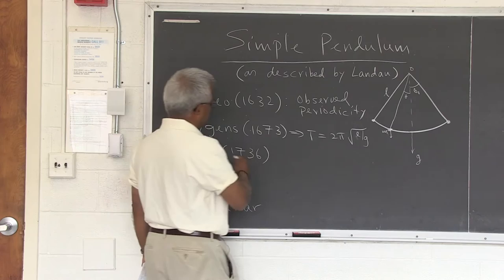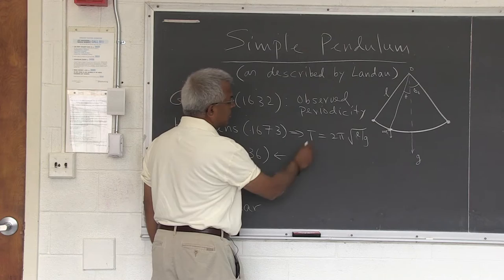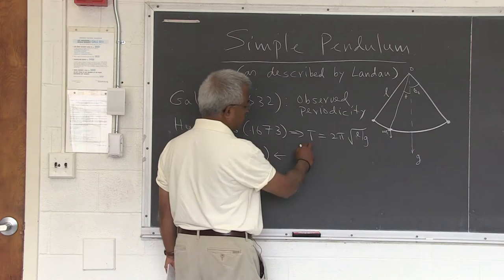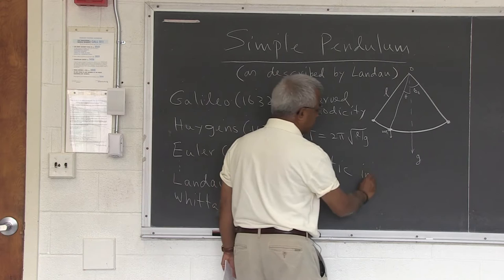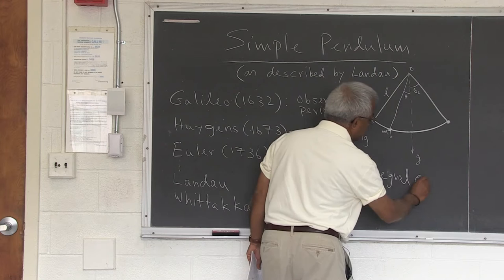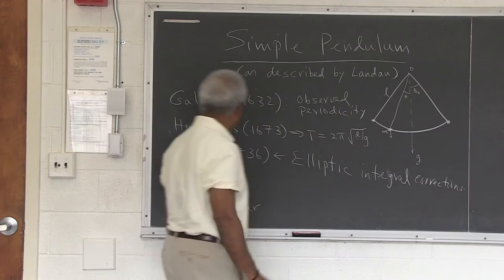And then later, Euler, in 1736 or around that time, came up with corrections to the periodicity — in other words, to the period in terms of elliptic integrals. These are the corrections that we are going to look at today.